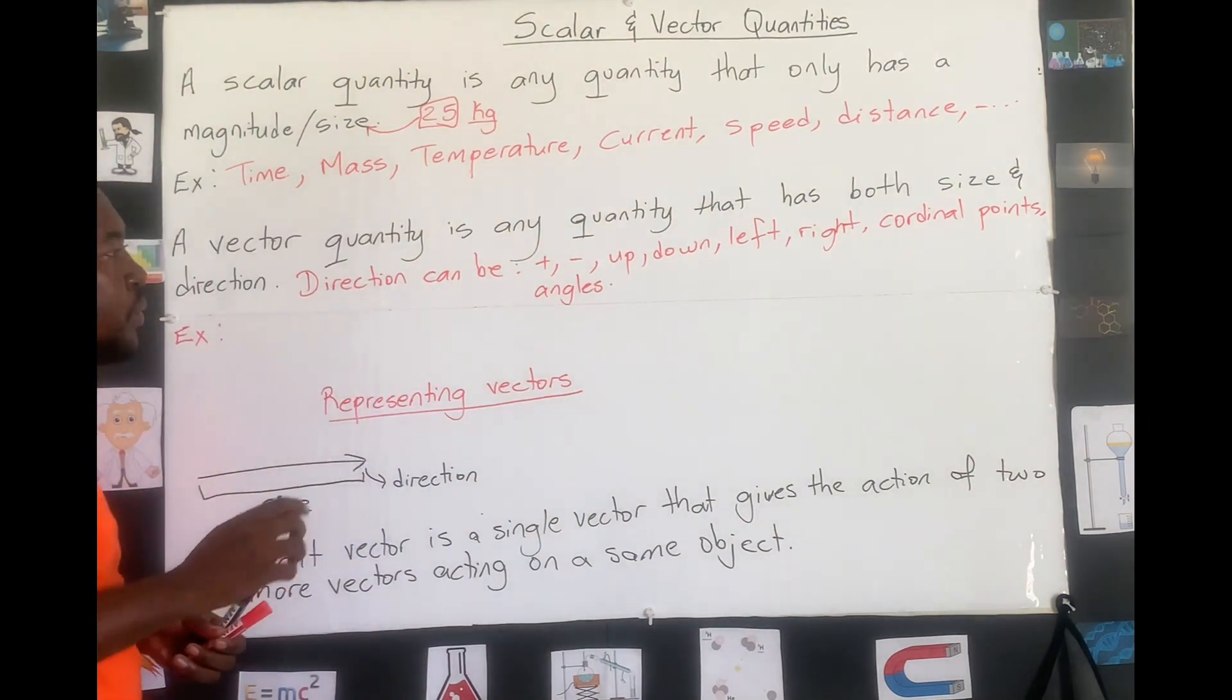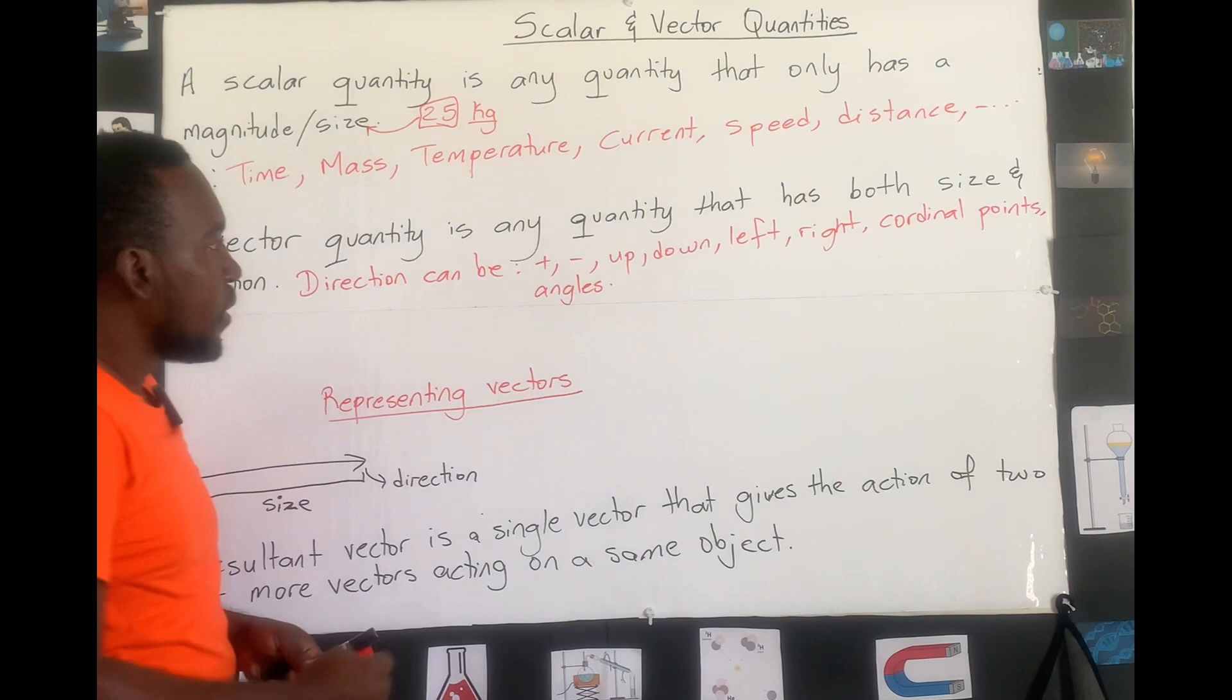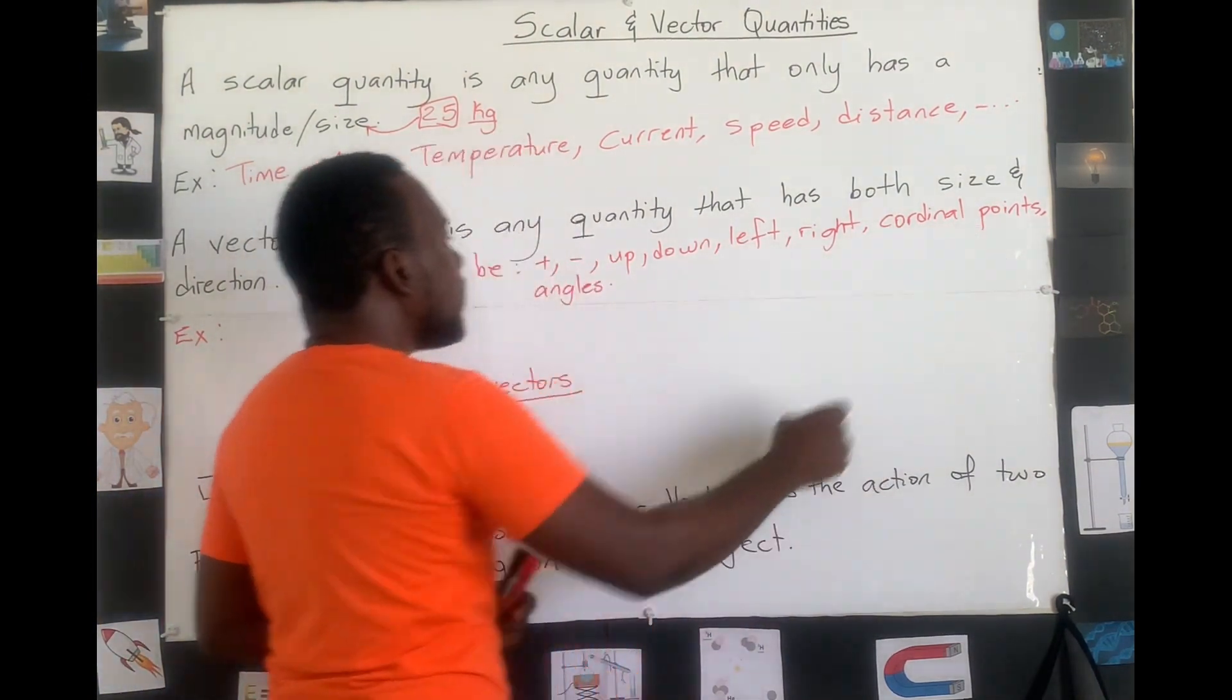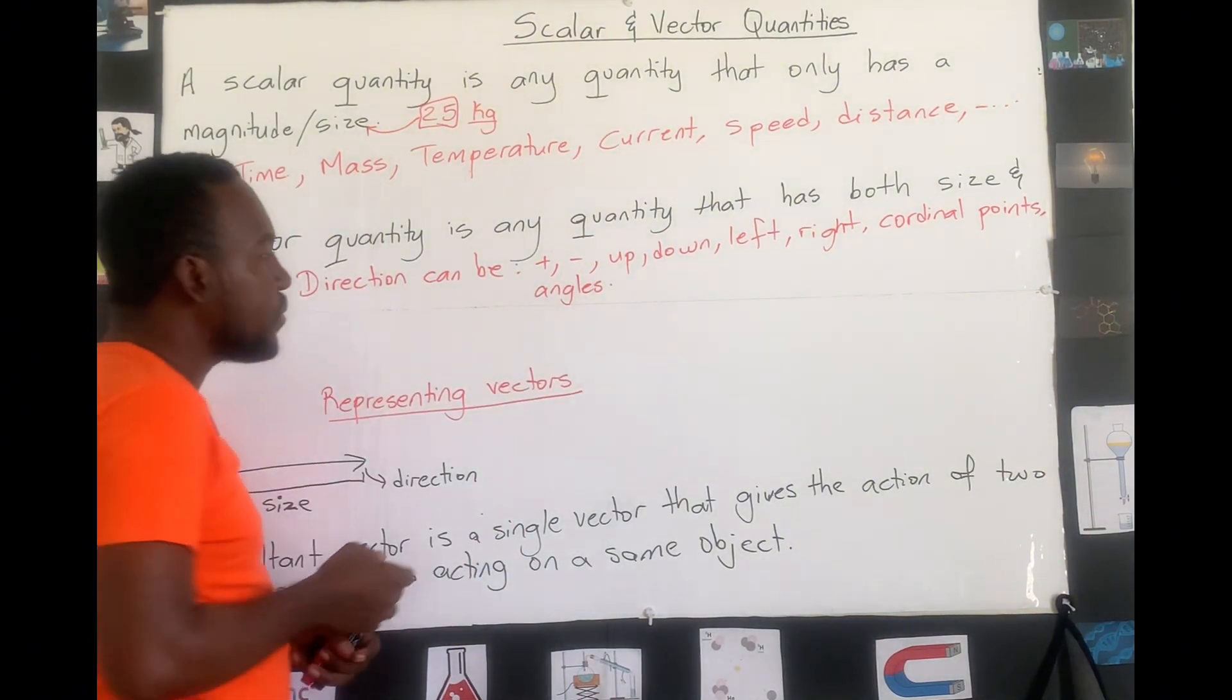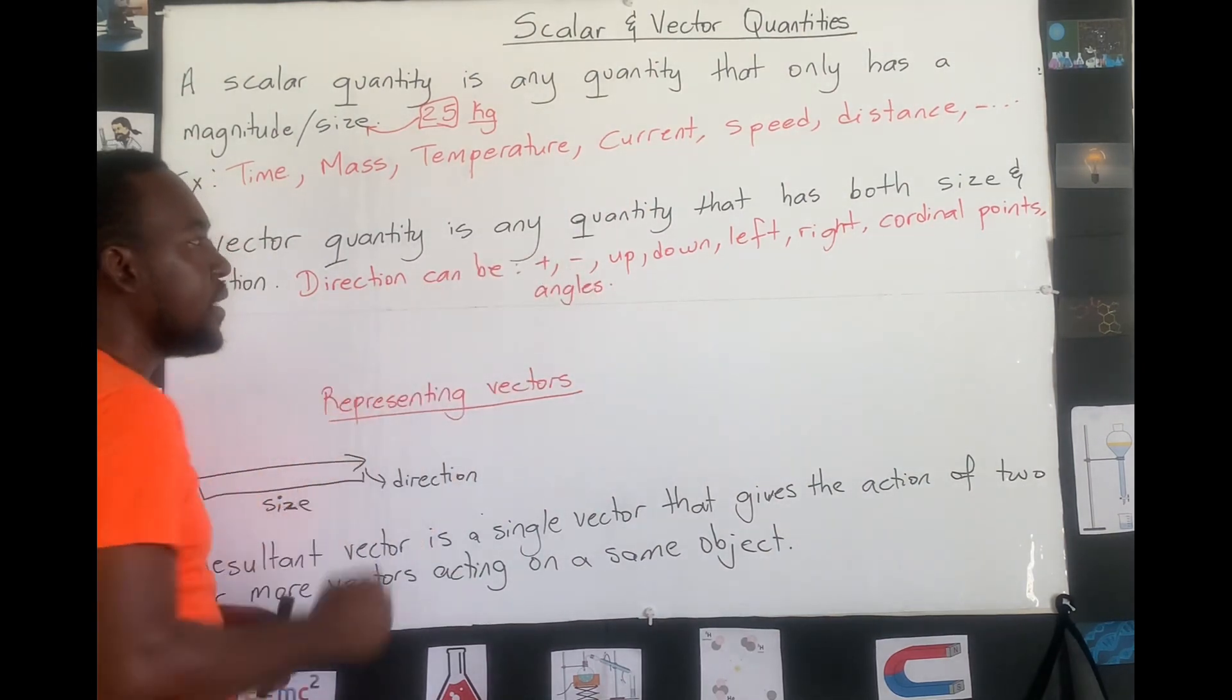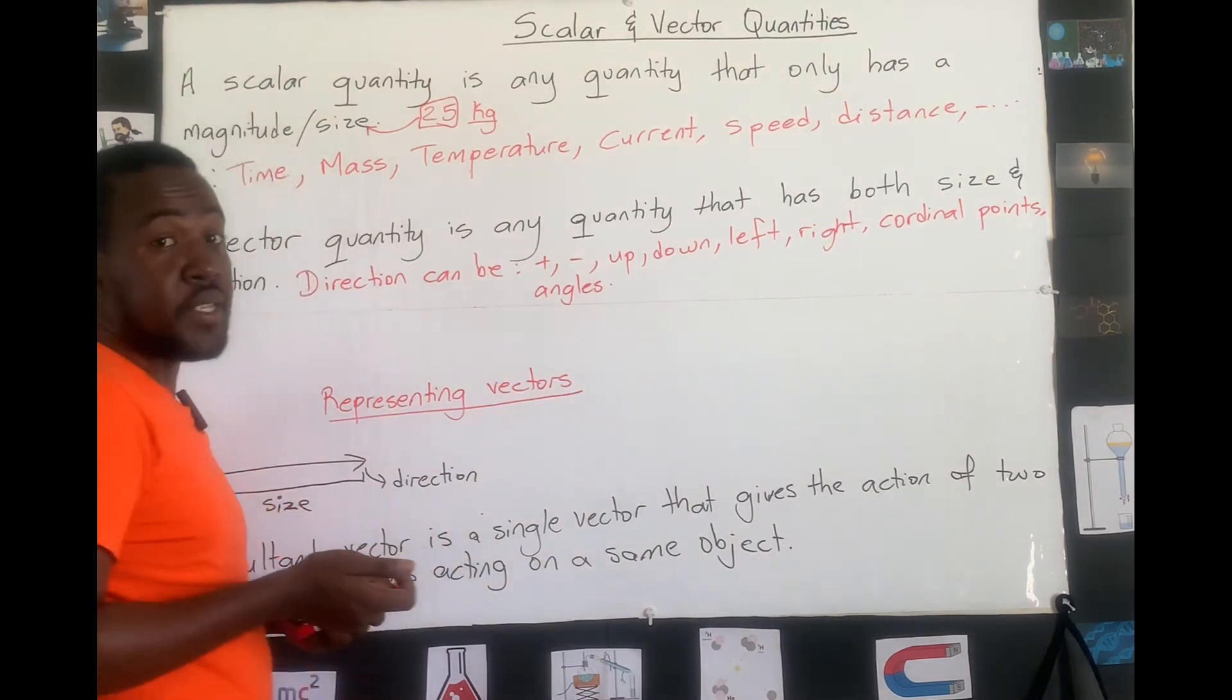In direction form, we will represent direction by using positive or negative numbers. We can use up or down, we can use left or right, or we can use the cardinal points, or more specifically or regularly, we will use angles. Angles and positive and negative numbers are the primary ways in which we represent directions in physics.